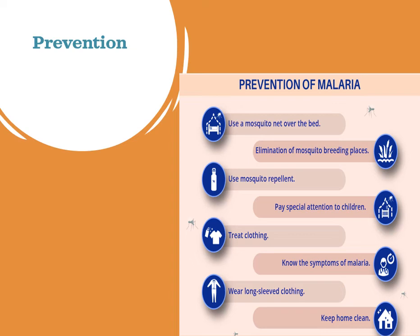Since malaria spreads through mosquitoes, preventions include: using a mosquito net over your bed, using mosquito repellents, using mosquito-killing equipment available in the market, paying special attention to children, knowing the symptoms of malaria, wearing long-sleeved clothes during the rainy season, keeping your home clean, and eliminating mosquito breeding places.